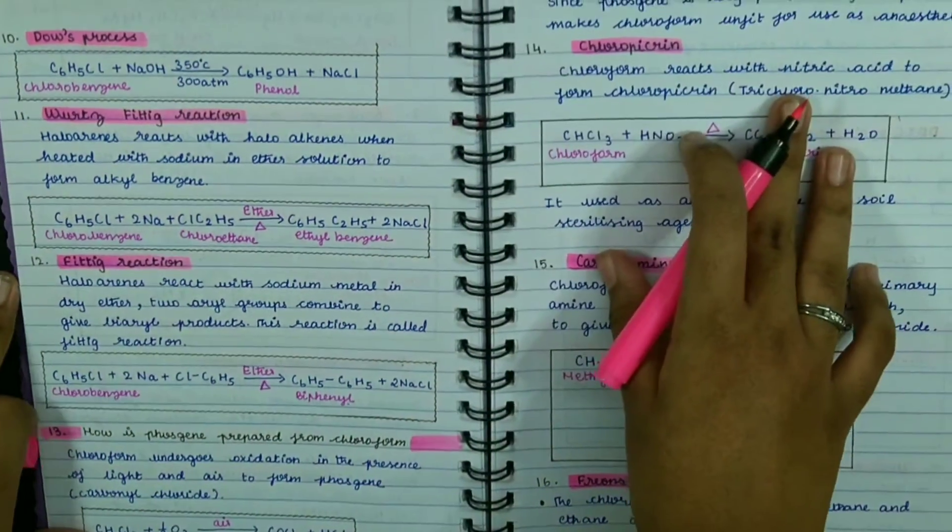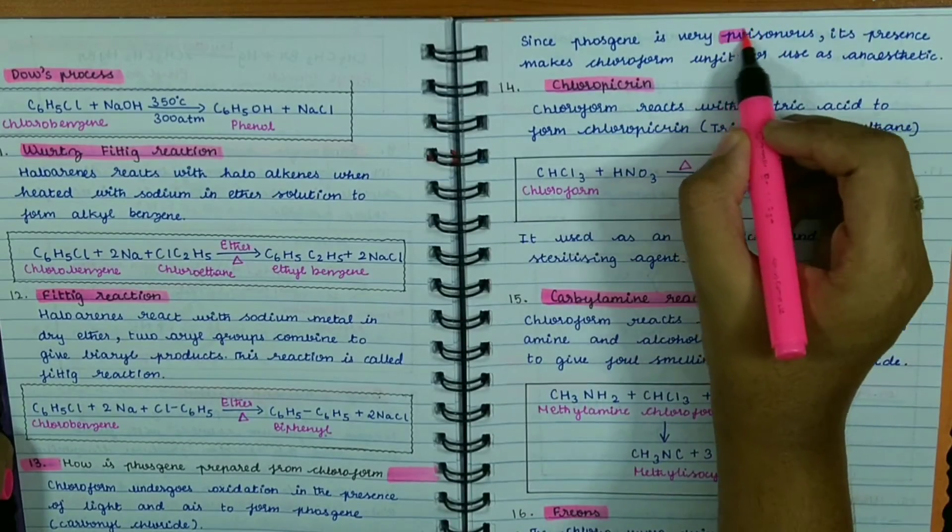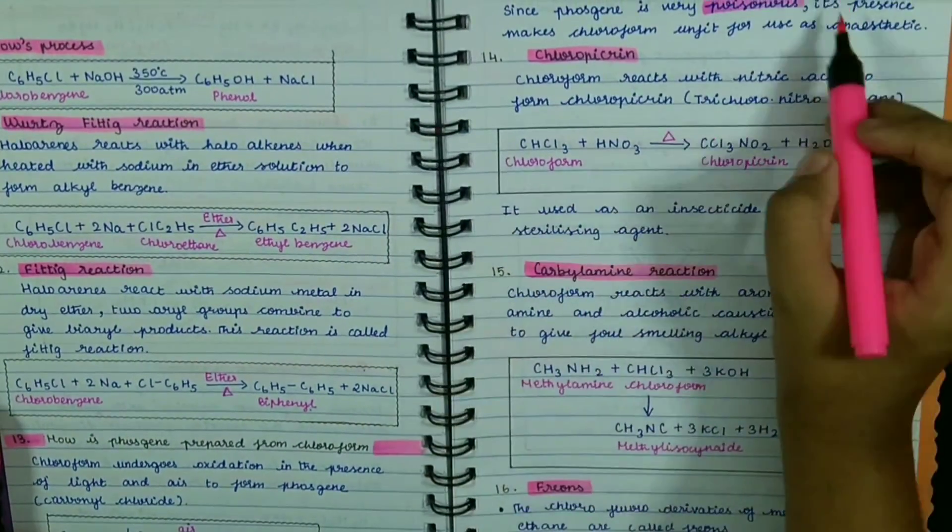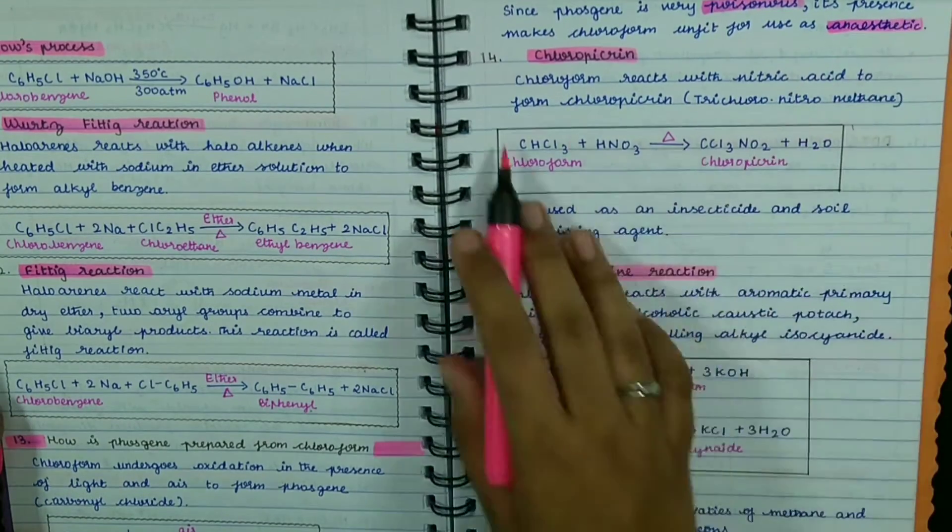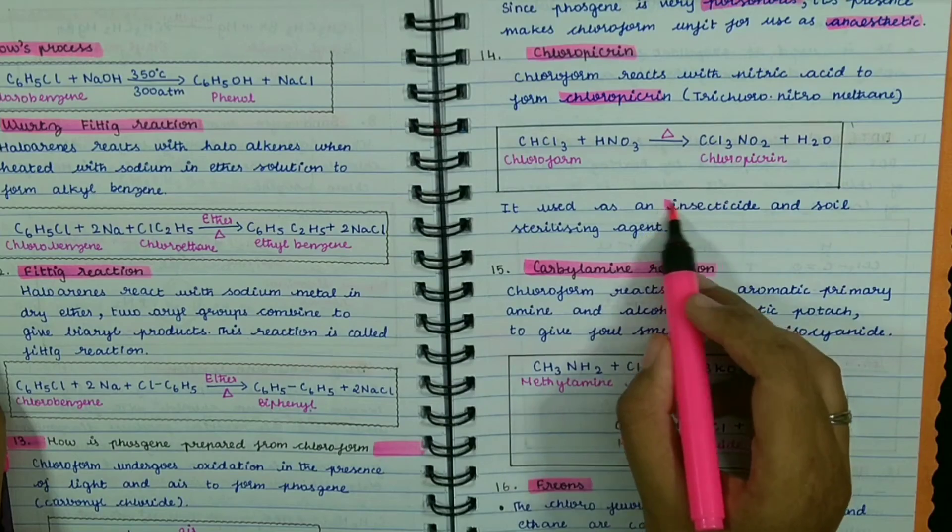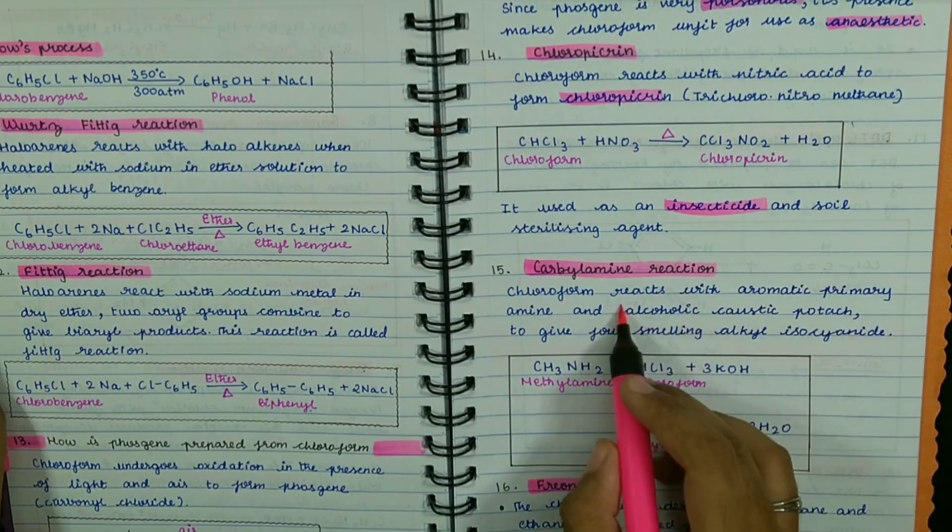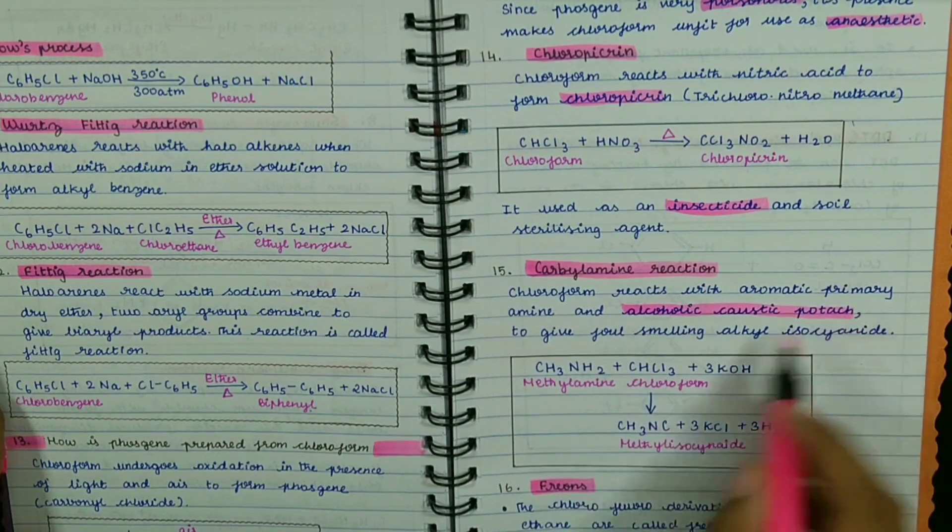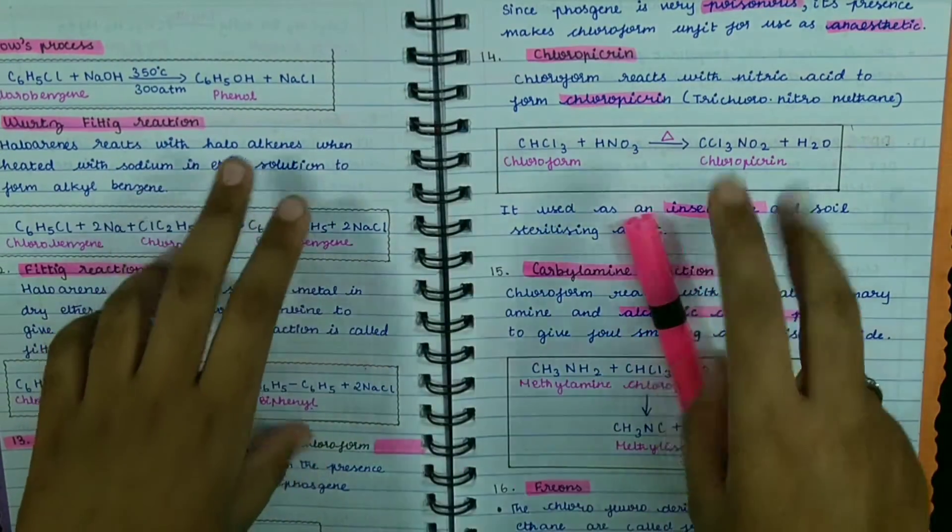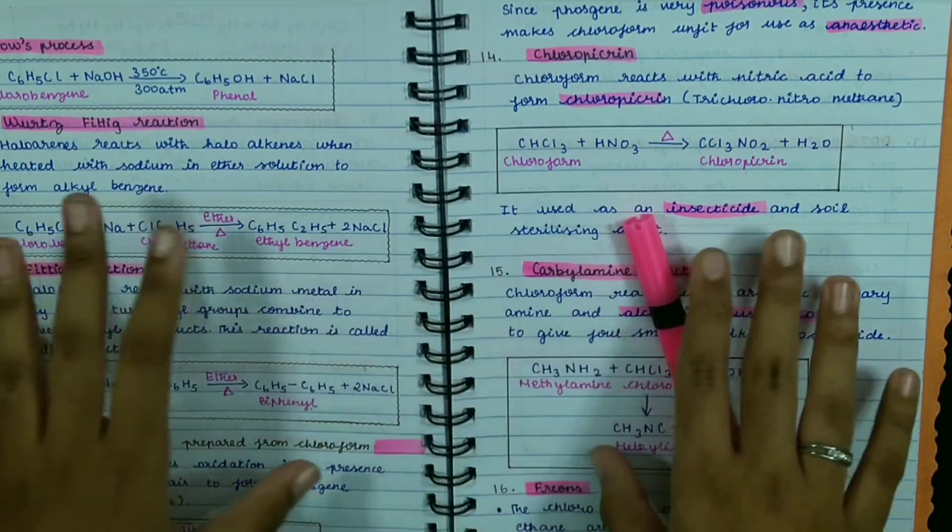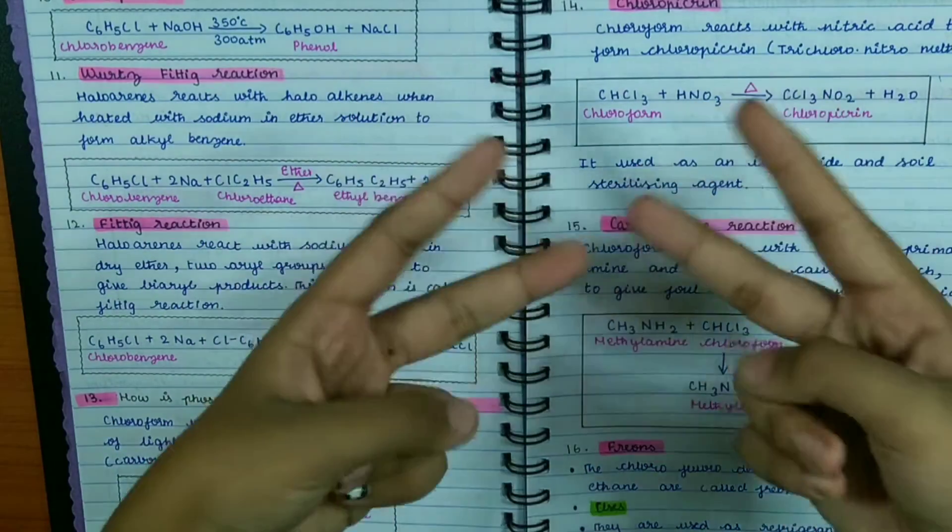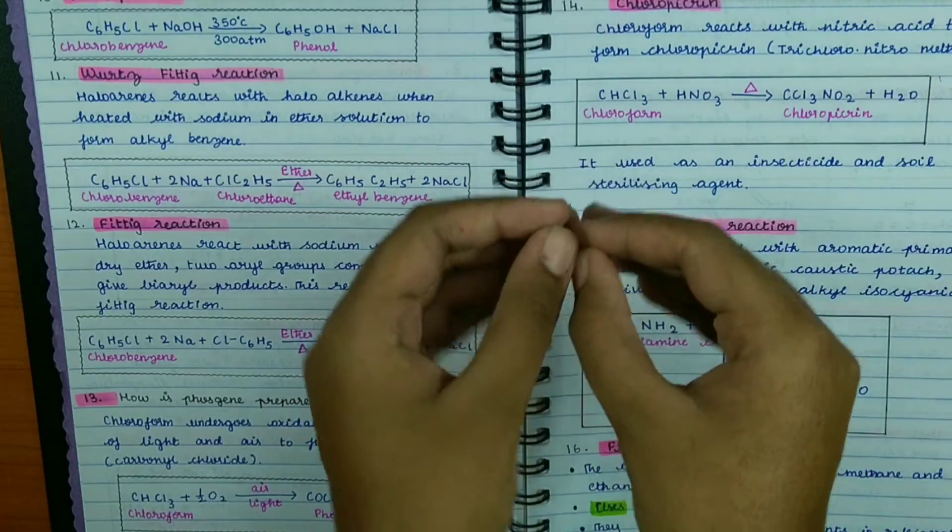For highlighting the points or the keywords, you can use the same brush pen or you can use a highlighter. I used to use the Cello pastel colored highlighters. That's how I take easy, effective, and aesthetic notes. Thank you so much for watching.